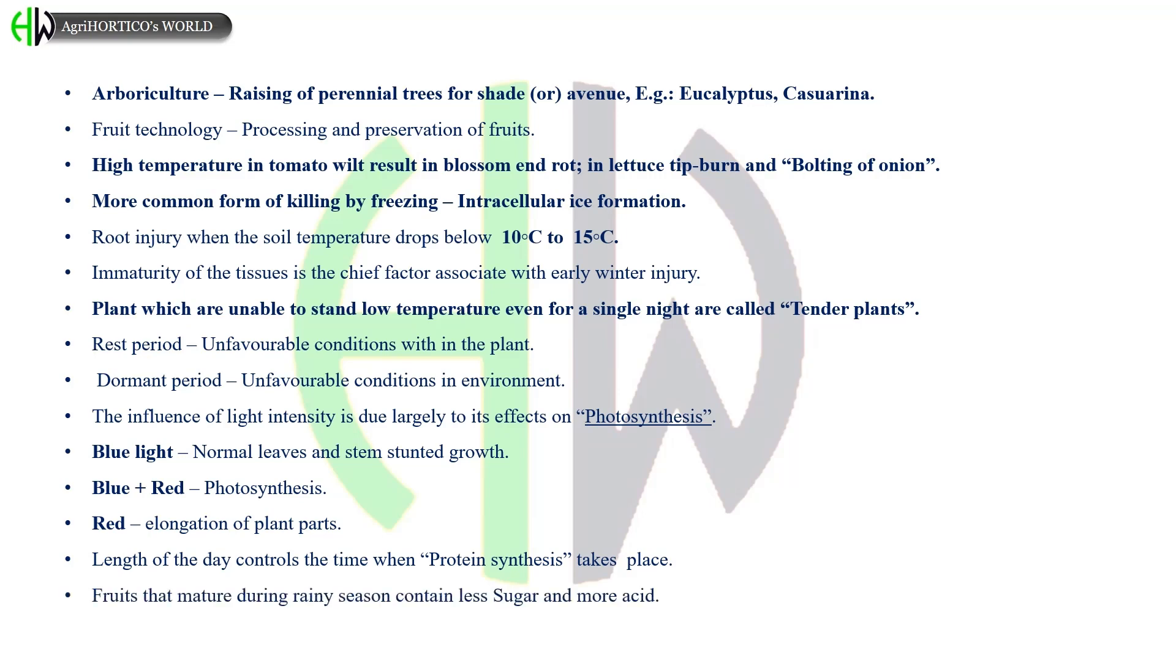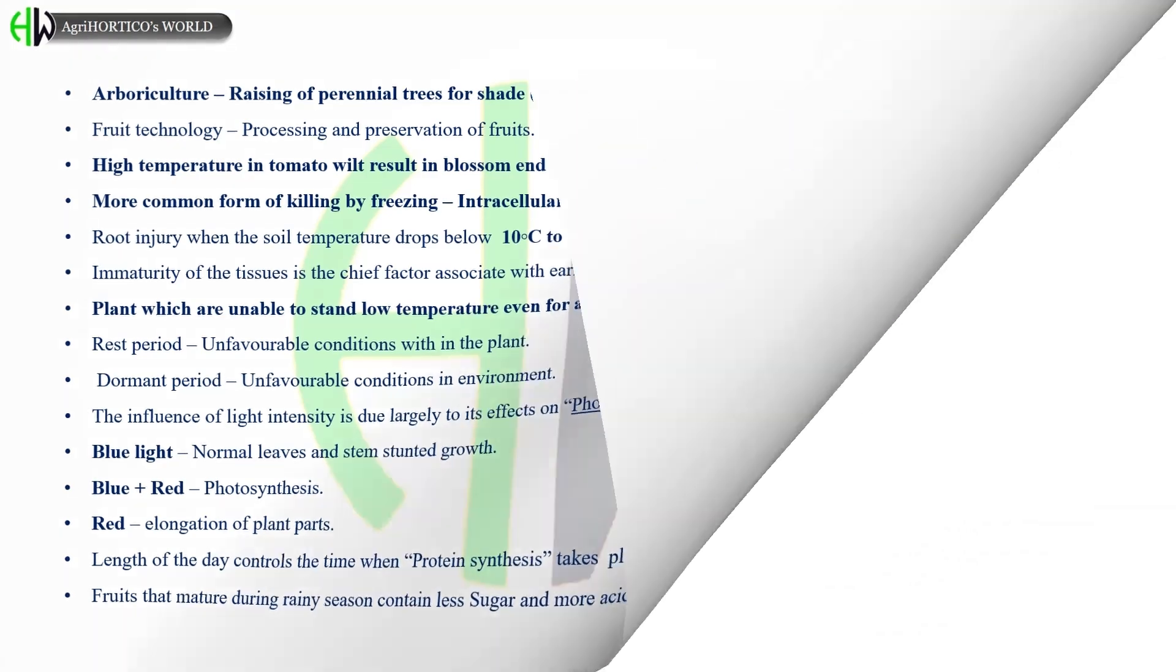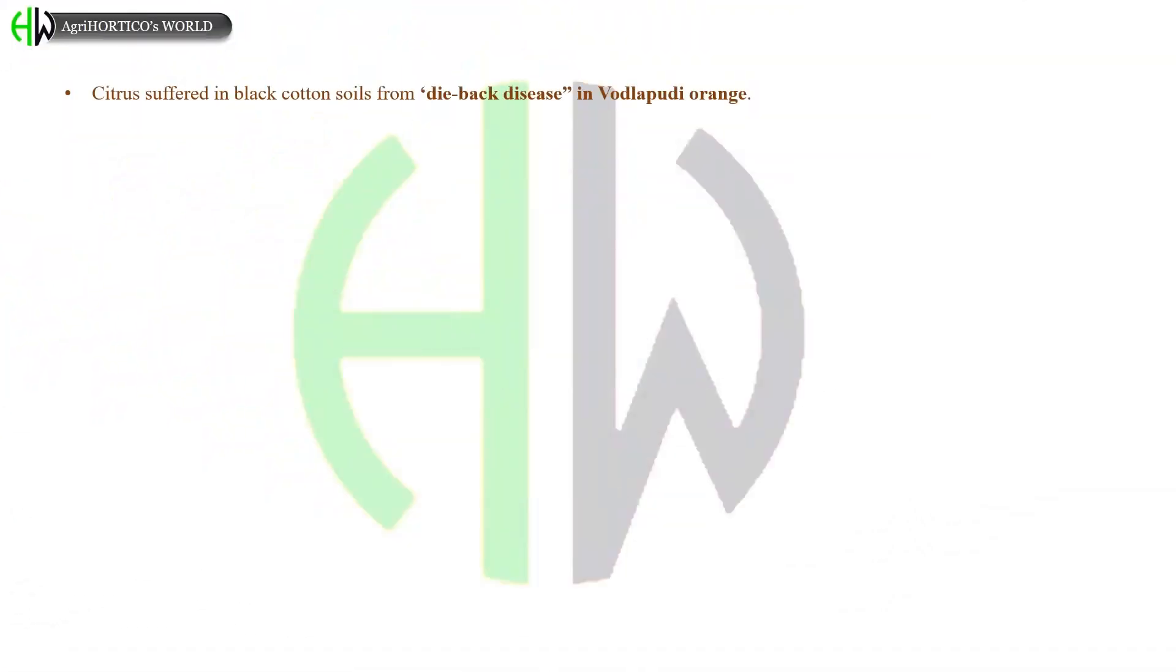Fruits that mature during rainy season contain less sugar and more acid. Citrus suffer in black cotton soils from die-back disease. In Vodlapudi orange, sandy loam soils of Telangana are chalka soils. Peaty soils are suited for growing spices and plantation crops.